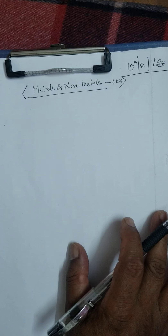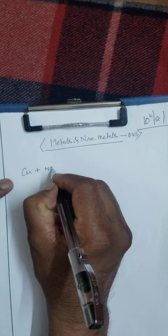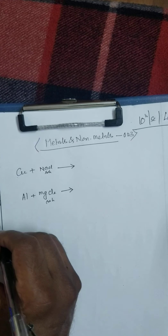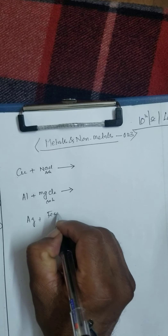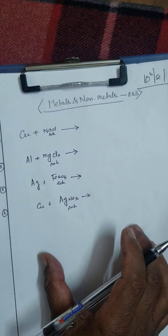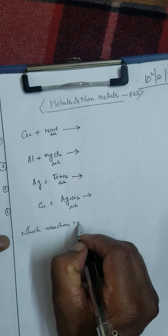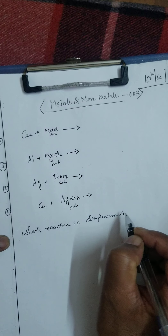We have been given four equations. The first is copper reactive with sodium chloride solution. The second reaction is aluminum plus magnesium chloride solution. The third is silver plus ferrous sulphate solution. The fourth is copper plus silver nitrate solution. The question is: which reaction is a displacement reaction?